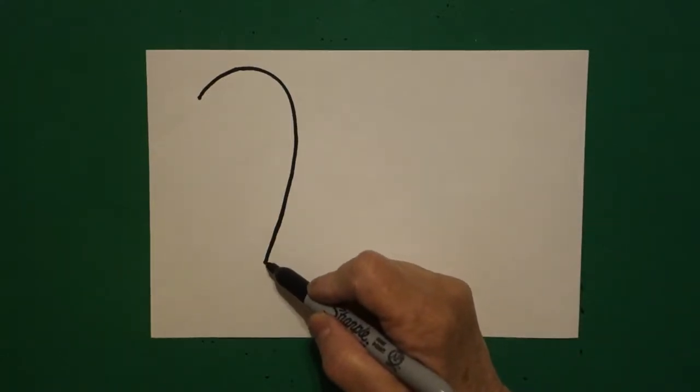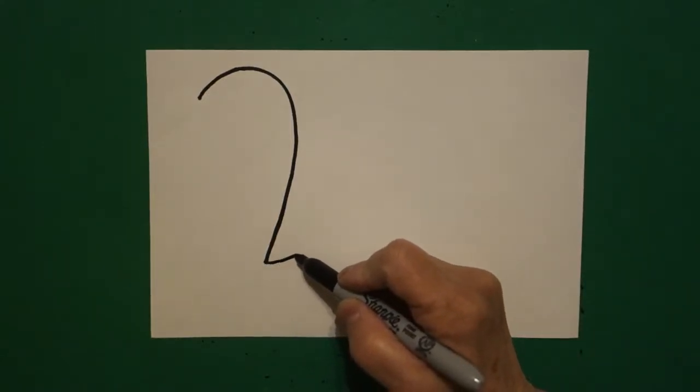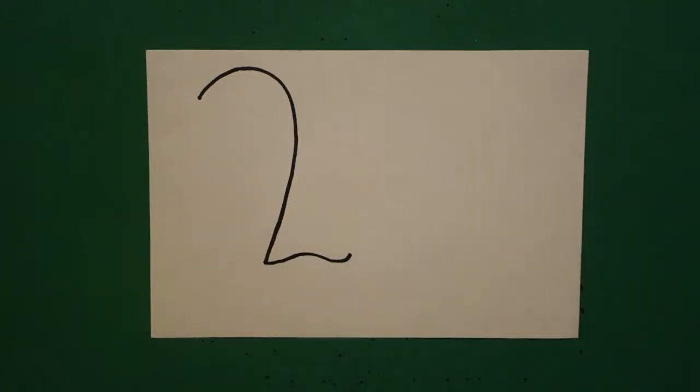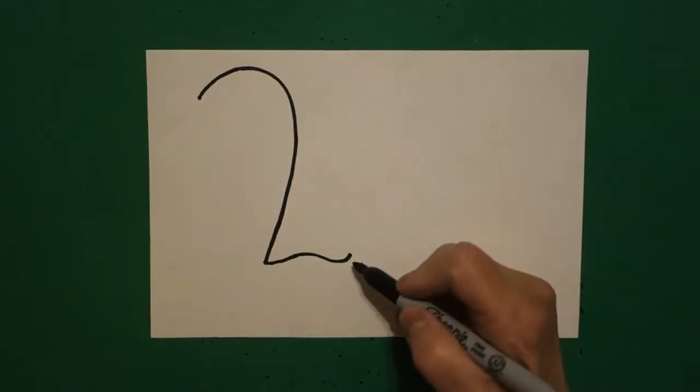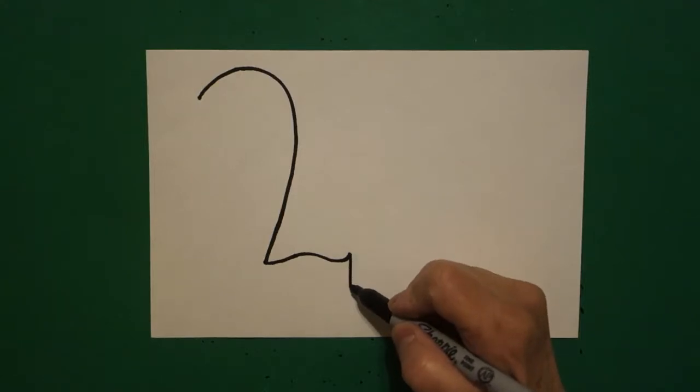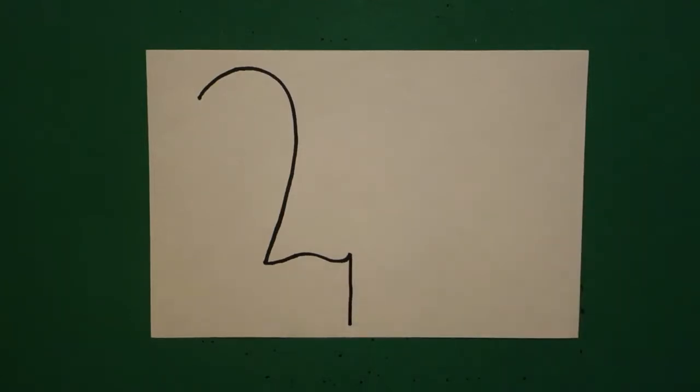Right where I stop here at the bottom I draw a little curve line up, down, up, and stop. Right where I stop I put a straight line down and leave it floating.